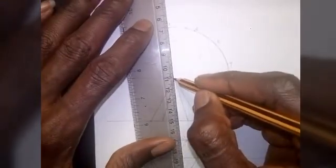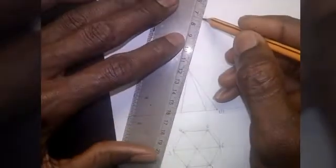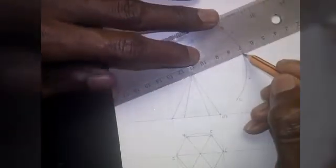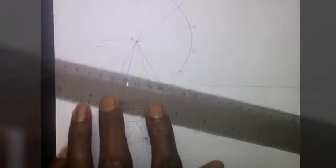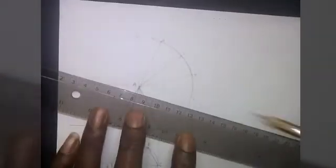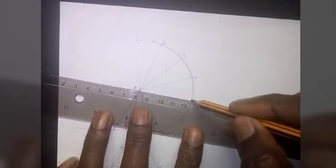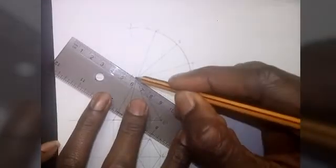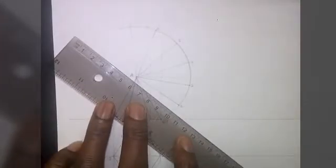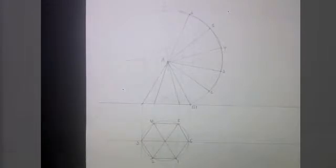Now I'll join the points to the apex. This is one, this is six, this is five, this is four, this is three, this is two, and of course you know one is always there.